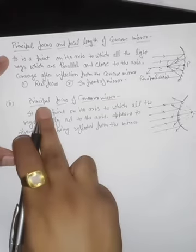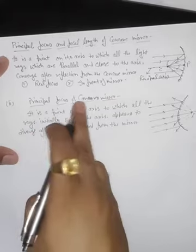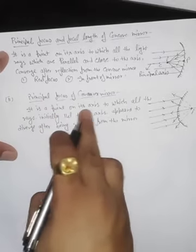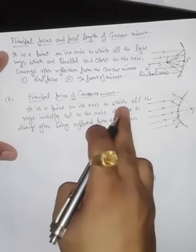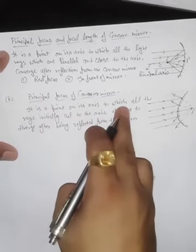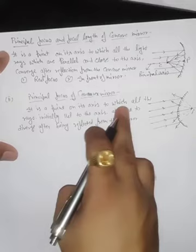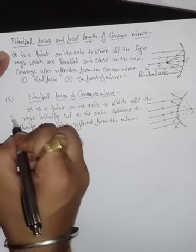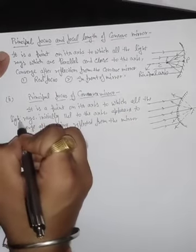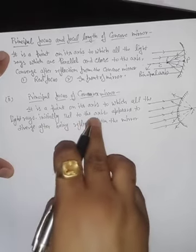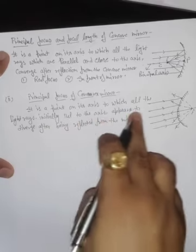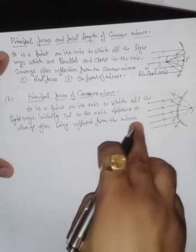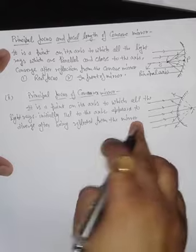Next point: principal focus of a convex mirror. It is a point on its axis to which all the light rays initially parallel to the axis appear to diverge after being reflected from the mirror.